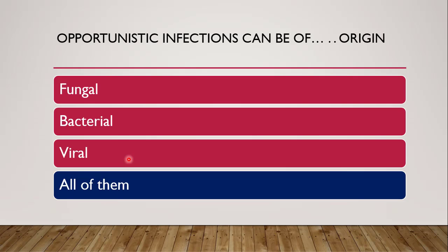Opportunistic infections are the infections which occur when an opportunity is provided because of low host defense. Whenever there is low immunity or low host defense, the virus, bacteria, or fungi will find a chance, enter into the host, and cause the infection. It can be fungal — there are various superficial fungal infections which are opportunistic in nature. There can be bacterial infections such as urinary tract infection, and the very famous opportunistic infection such as AIDS and HIV.